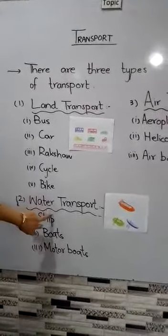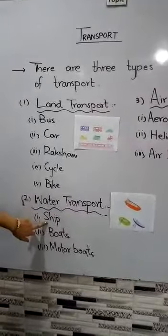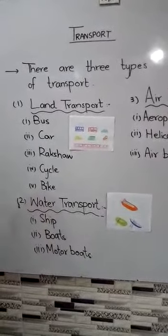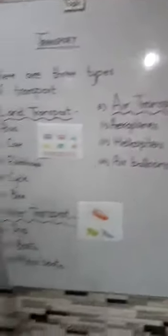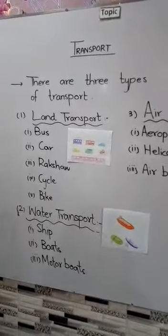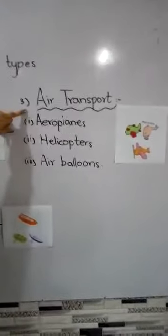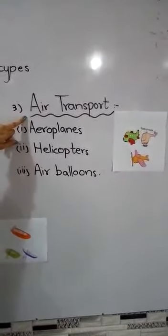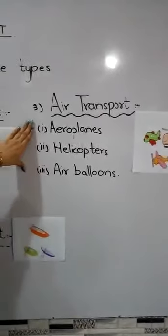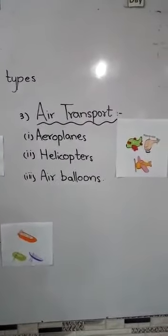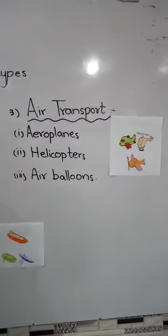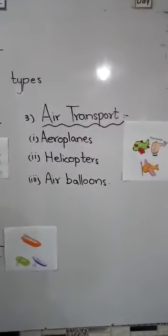The second type of transport is water transport. In water transport, we use ships, boats, motor boats, cruise liners and submarines to travel through water. We can also use big boats, ships and cruises for the transport of goods and trade purposes. The third type is air transport. In air transport, we travel through aeroplanes, helicopters and sometimes air balloons. The fastest way of travelling is air transport because aeroplanes can cover large distances in a very short time period. I hope you have understood the concept and learned the three types of transport.